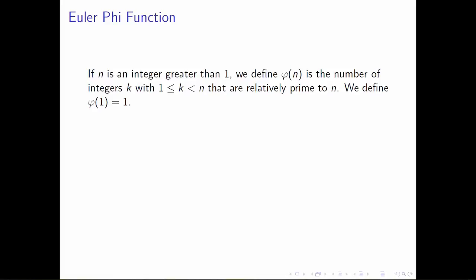Occasionally, not so much in abstract algebra but in a number theory context, you're going to want to define a value for phi of 1, which doesn't necessarily make sense from the way we've defined it. But by convention, we do define phi of 1 to be 1.